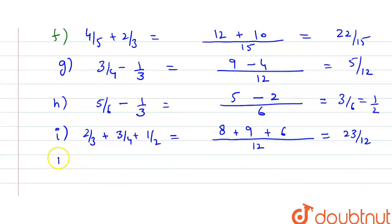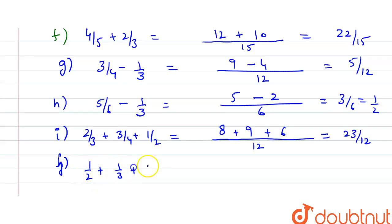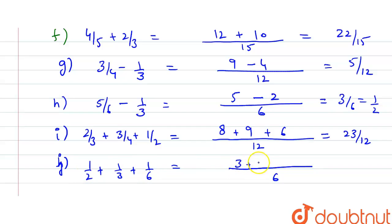Part (j) is 1/2 + 1/3 + 1/6. The LCM of 2, 3, and 6 is 6. So the numerators become 3, 2, and 1. Adding gives 6/6, which equals 1.